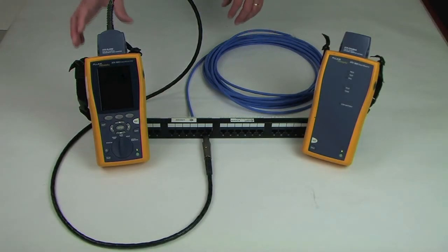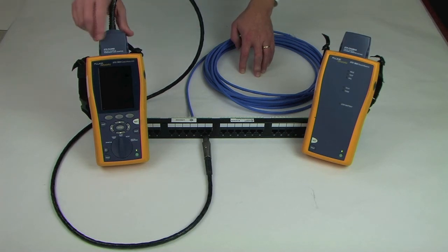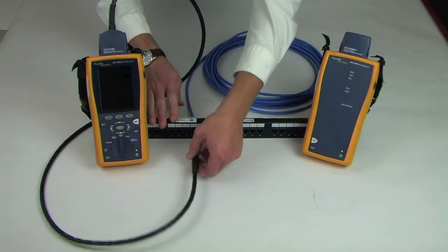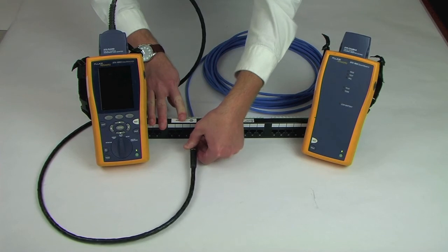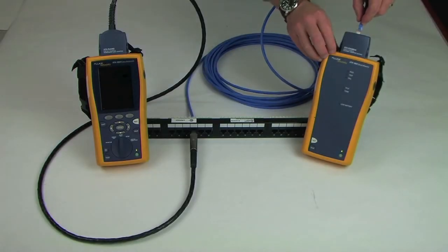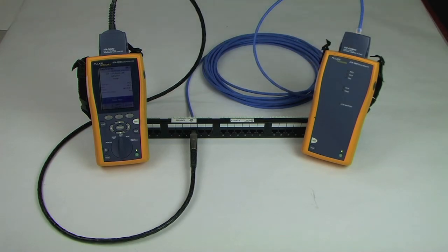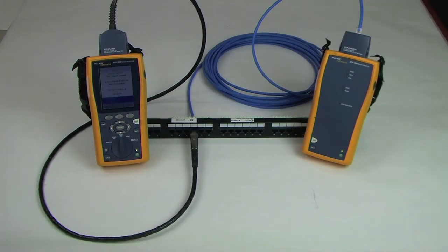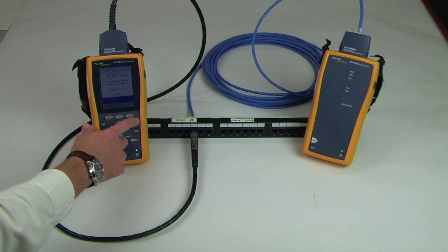A permanent link adapter is attached to the DTX main unit. The plug-end of the adapter is inserted into the appropriate patch panel port. Next, we'll insert the field-terminated plug into the channel adapter that is attached to the smart remote. Once the connections are made, we'll press the test button and wait for the results.